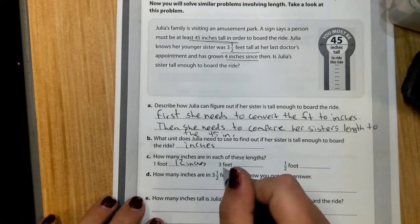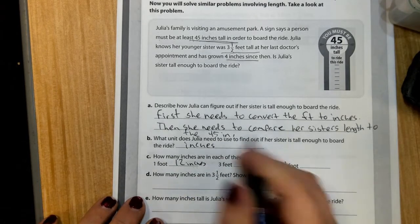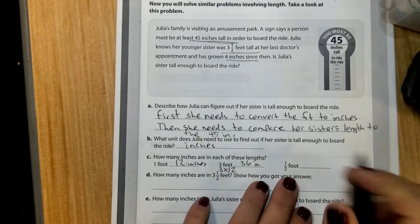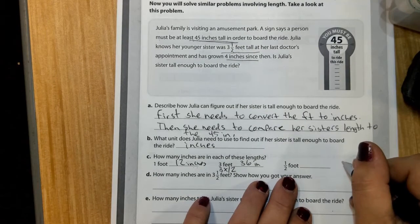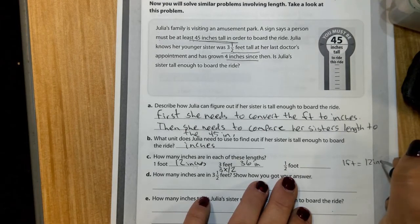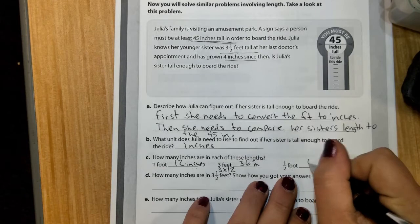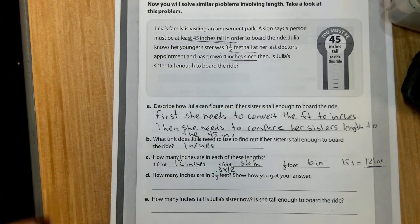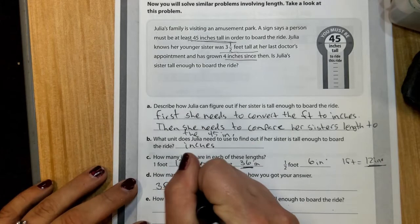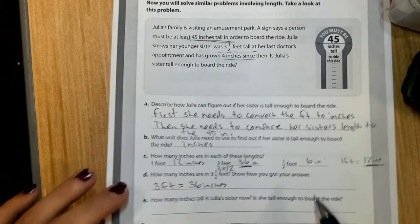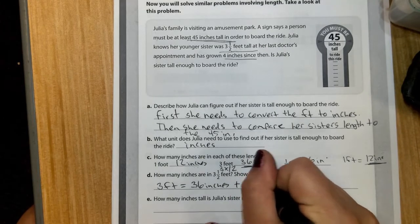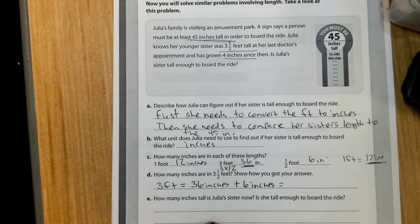C is asking us how many inches are in each of these lengths. Remember, one foot is the same as saying 12 inches. Three feet, we're going to multiply three times 12 and we get 36 inches. A half a foot, well a half of 12 would be six inches. We're just going to add those together. When we add those together, we get 42 inches.